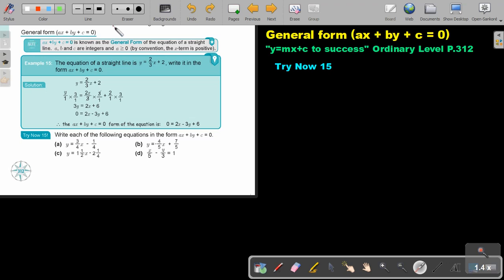This is the general form where they write everything on one side, first the x, then the y, then the constant, and then equal to 0.